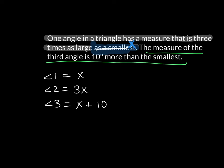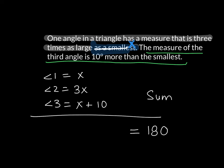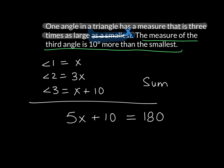I take all those angles, find their sum, and set it equal to 180. Adding X plus 3X plus one more X gives me 5X. So 5X plus 10 is equal to 180. I subtract 10 from both sides, then divide both sides by 5, and I'm left with X is equal to 34.